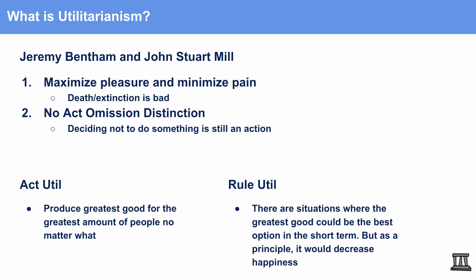The nuances of utilitarianism fall into two separate subsets. The first is act utilitarianism, which says that you should produce the greatest good for the greatest amount of people, no matter the situation. Rule utilitarianism is a little more moderate — it says there are situations where the greatest good might be the best option in the short term, but as a principle it would decrease happiness. So rule utilitarianism says we should have certain principles or guidelines on which actions are in fact good or bad, rather than solely maximizing pleasure in every instance.